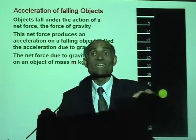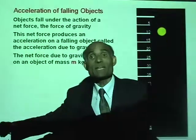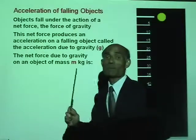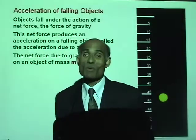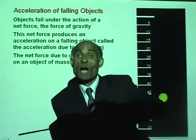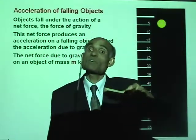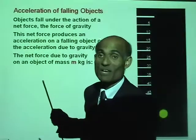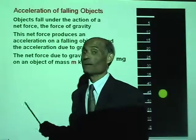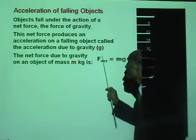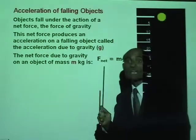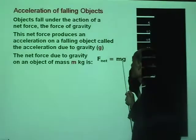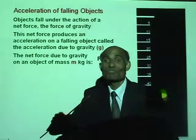You know that F net equals ma. In this case, the acceleration a is g. So every time you want to talk about the acceleration of a falling object, in place of a you will use g. Therefore, the net force that makes an object fall equals m times g, where g is the acceleration of free fall.